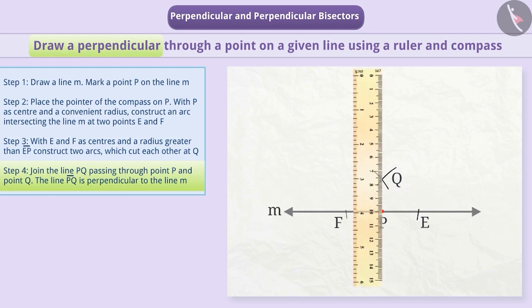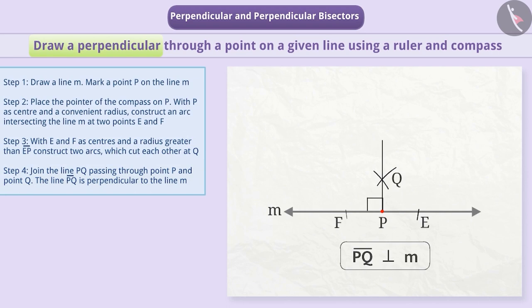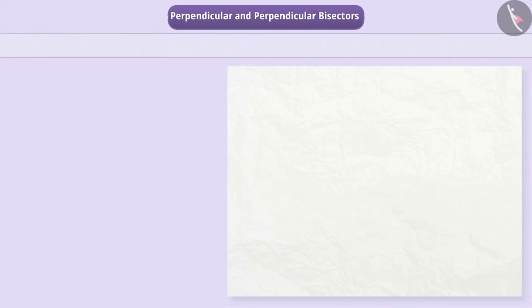Step 4: We will join the line PQ passing through point P and point Q. The line PQ is perpendicular to the line M.